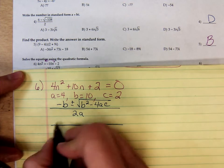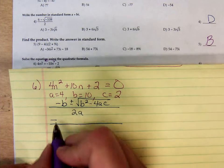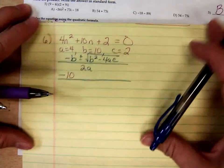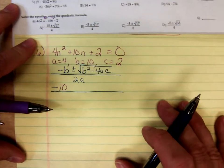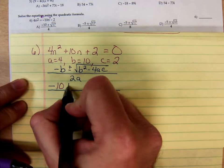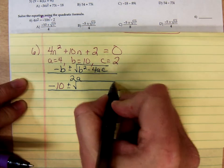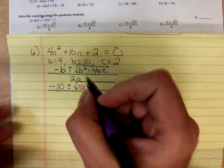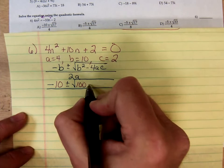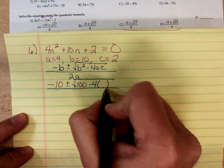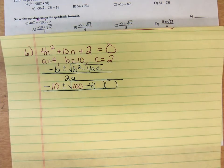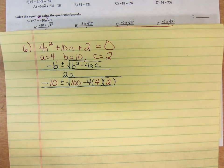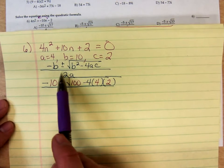So plug it in. Negative B plus minus the square root of B squared. I always do B squared in my head. 10 times 10, 100. Minus 4 times A times C. A is the purple 4, C is 2. All over 2 times A. The 2 times A I do in my head. 2 times 4, 8.